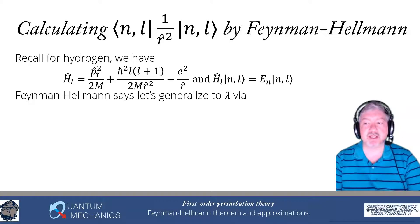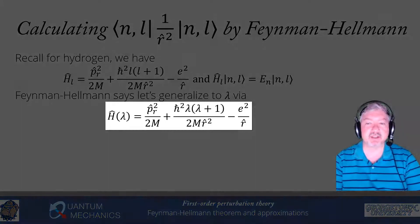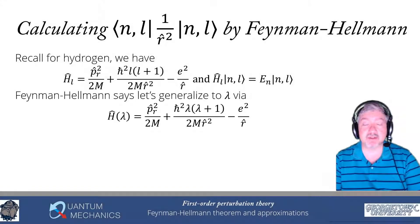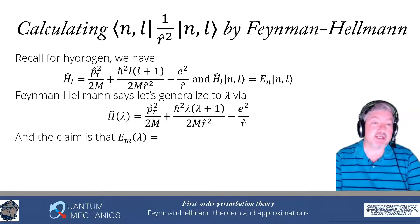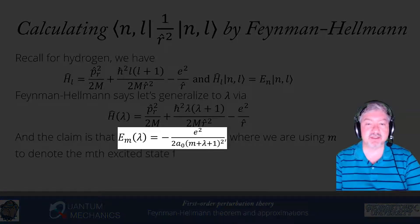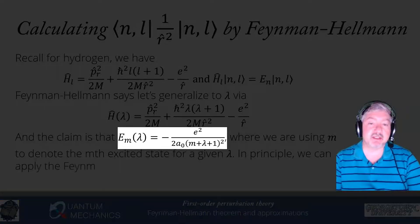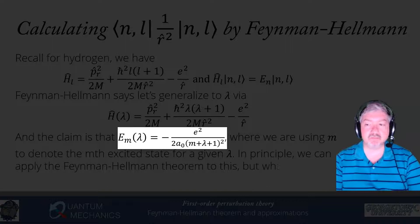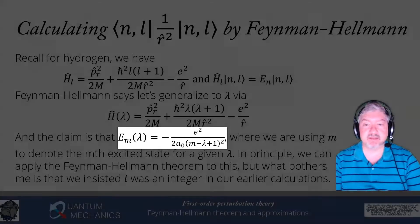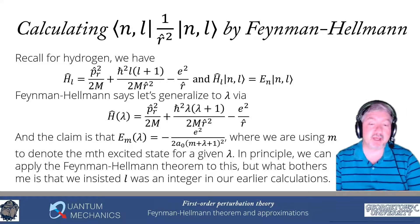The Feynman-Hellman theorem says: let's generalize by replacing L with a continuous parameter lambda, calling this H(lambda). We did something very similar during the Cartesian factorization for hydrogen. The energy expressed as a function of lambda can be written as E_m(lambda) equals minus e squared over 2a_0 times (m plus lambda plus 1) squared, where m indicates the m-th excited state above the ground state for a given lambda value. In principle we can apply Feynman-Hellman, but what's troubling is that L was required to be an integer, so taking a derivative of something that was supposed to be an integer seems potentially problematic.